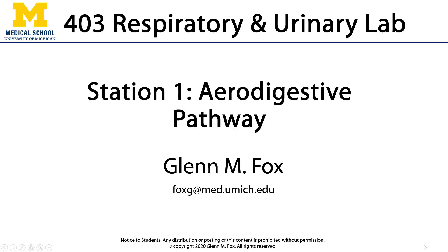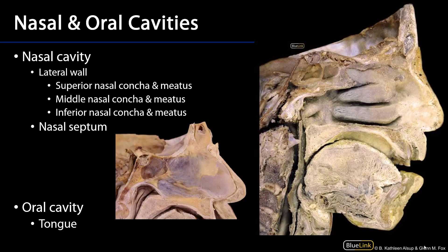Let's talk about the aerodigestive pathway. As we've discussed previously, the more proximal portions of the respiratory pathway are also shared largely with the digestive system. Areas like the oral cavity and the pharynx are also digestive pathways as well as respiratory pathways, and so we call them the aerodigestive pathway.